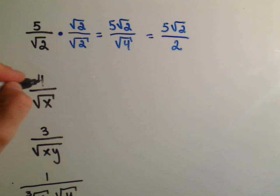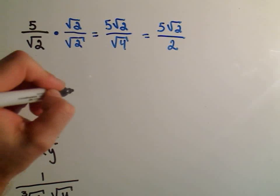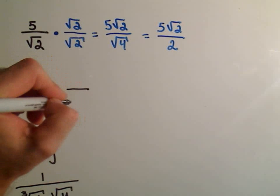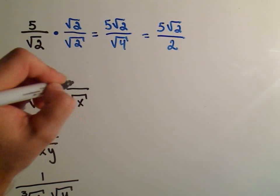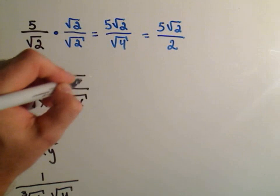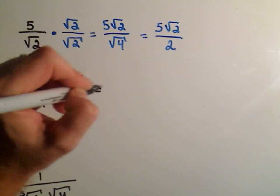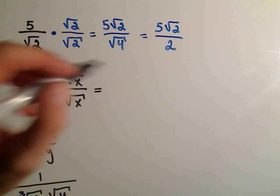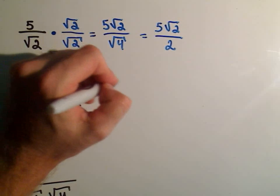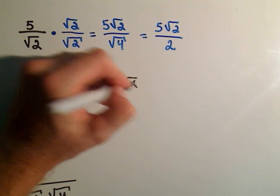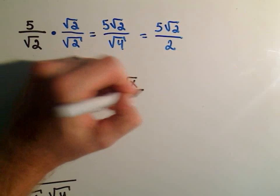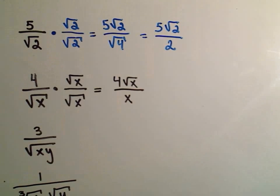If you have 1 over 4 times the square root of x, we can multiply the bottom by the square root of x and the top by the square root of x. On the top, we're left with 4 square root of x. On the bottom, square root of x times square root of x is just x.